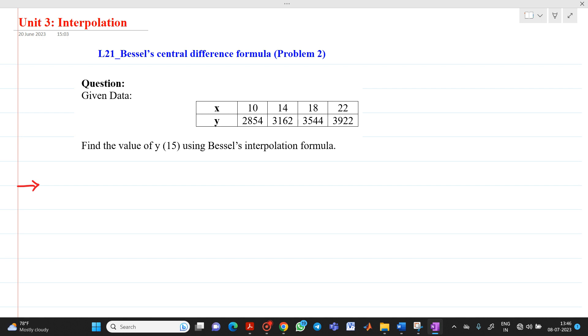We will solve a second problem of Bessel's central difference formula. We have data: x equals 10, 14, 18, 22 and corresponding y values, and we have to find out y of 15. So 15 will be here in between these. Let me take this as x0, x1, x2.